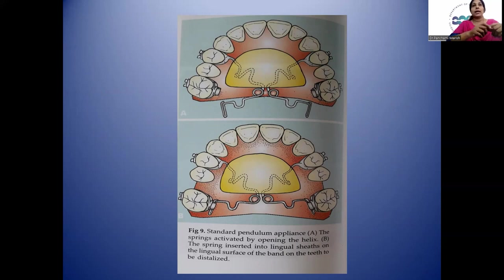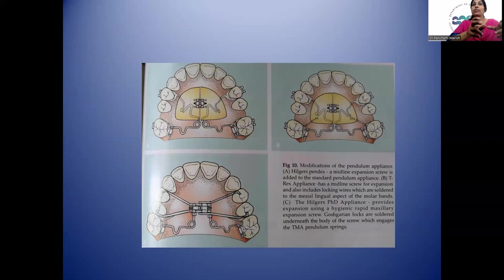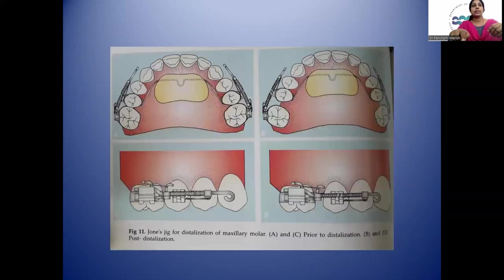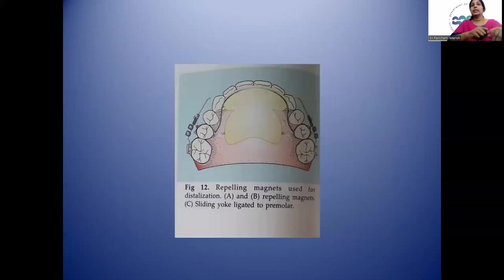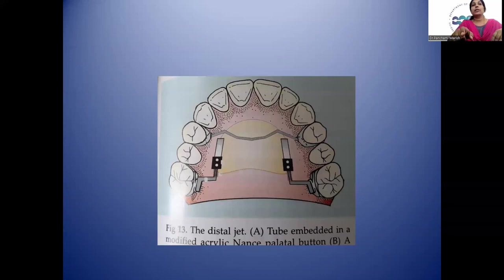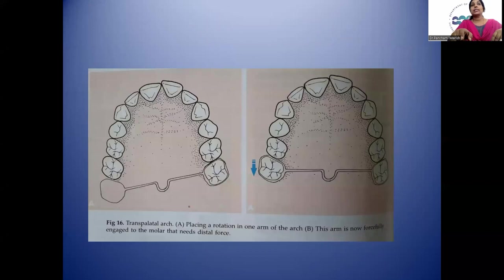The wires are placed into the sleeve on the lingual surface of the band on the teeth to be distalized. Modifications of the pendulum appliance include Hilgers' Pendex, Hilgers' PhD appliances, and the T-Rex appliance. The Jones Jig is another option for distalization of molars, shown before and after distalization. Repelling magnets can also be used for distalization. The Distal Jet uses a tube embedded in a modified acrylic palatal NANCE button. The transpalatal arch works by replacing rotation — one of the arms of the arch is forcefully engaged to the molar that needs distal force.